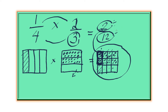Then when we reduce this by 2, you get 1 over 6. So that's how we represent the standard rule of multiplication of fractions using this diagram.